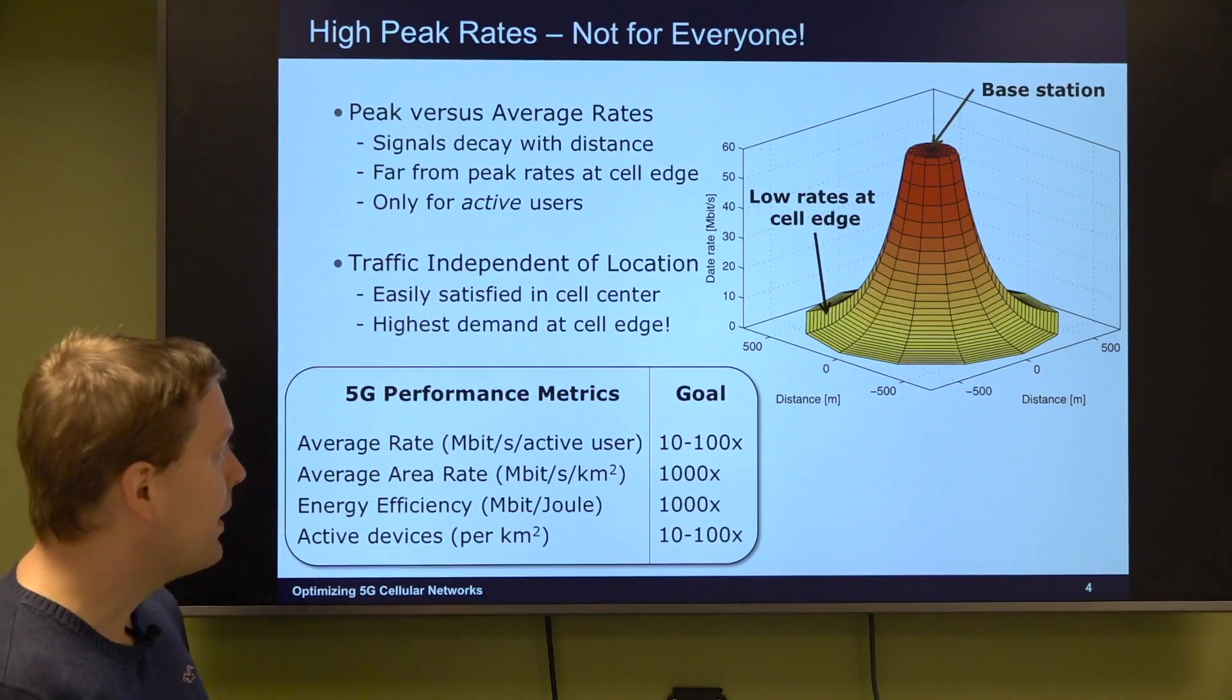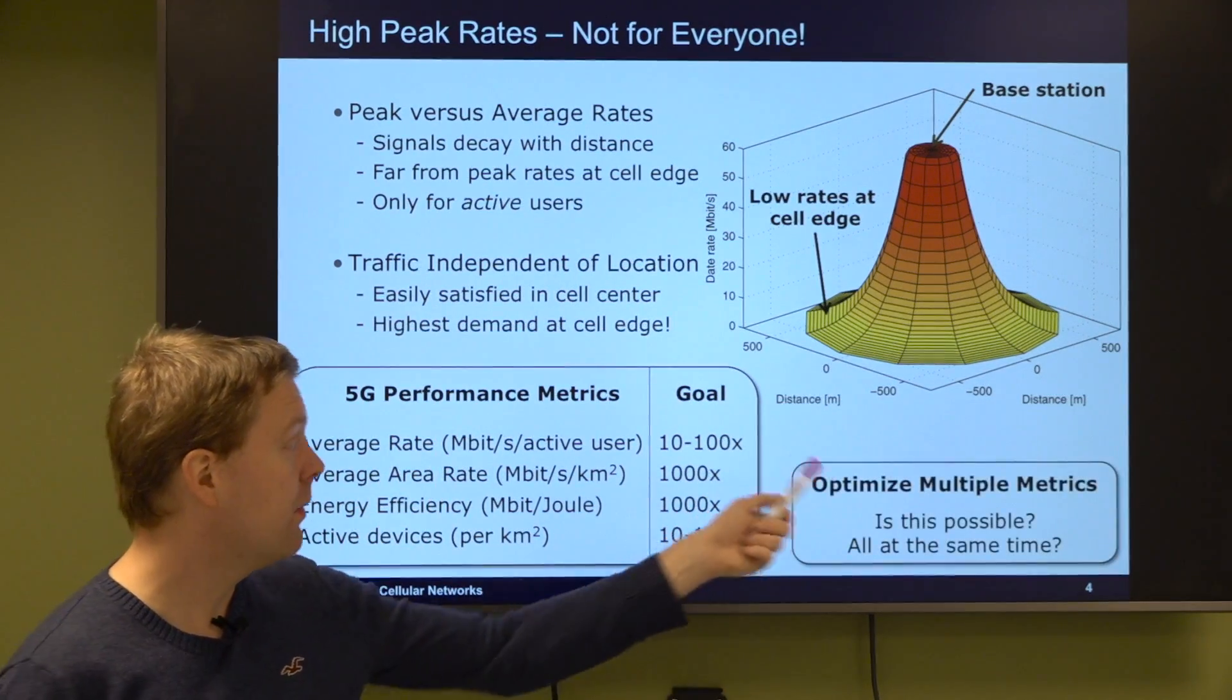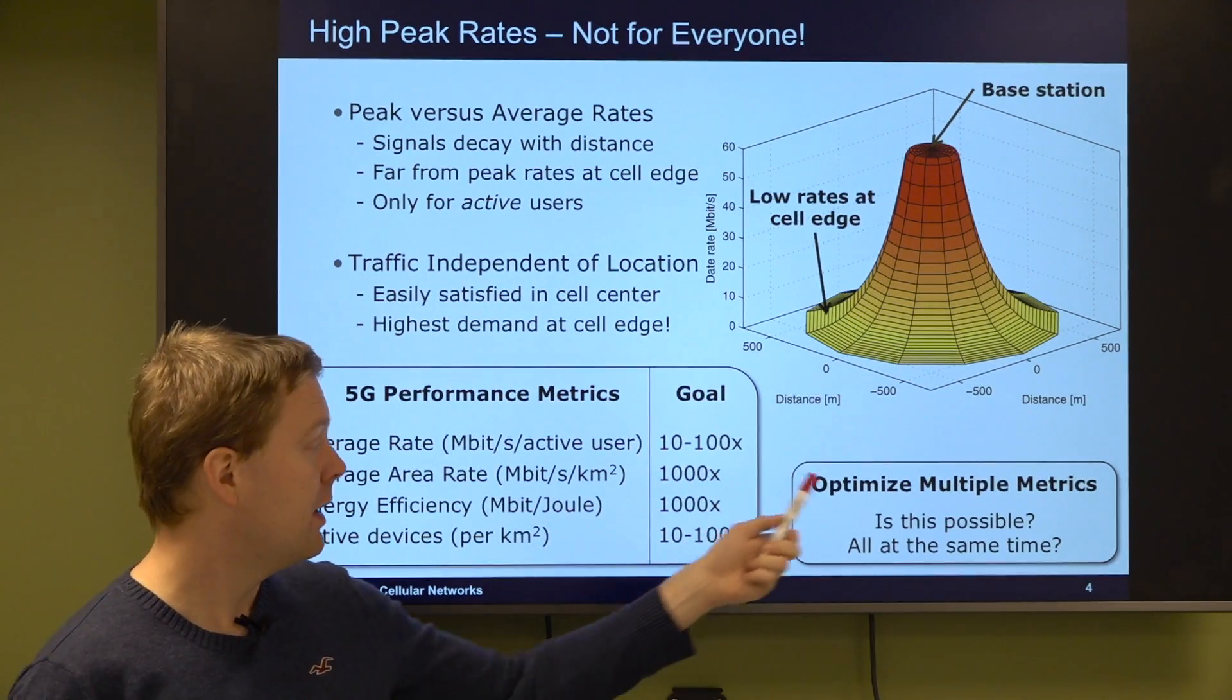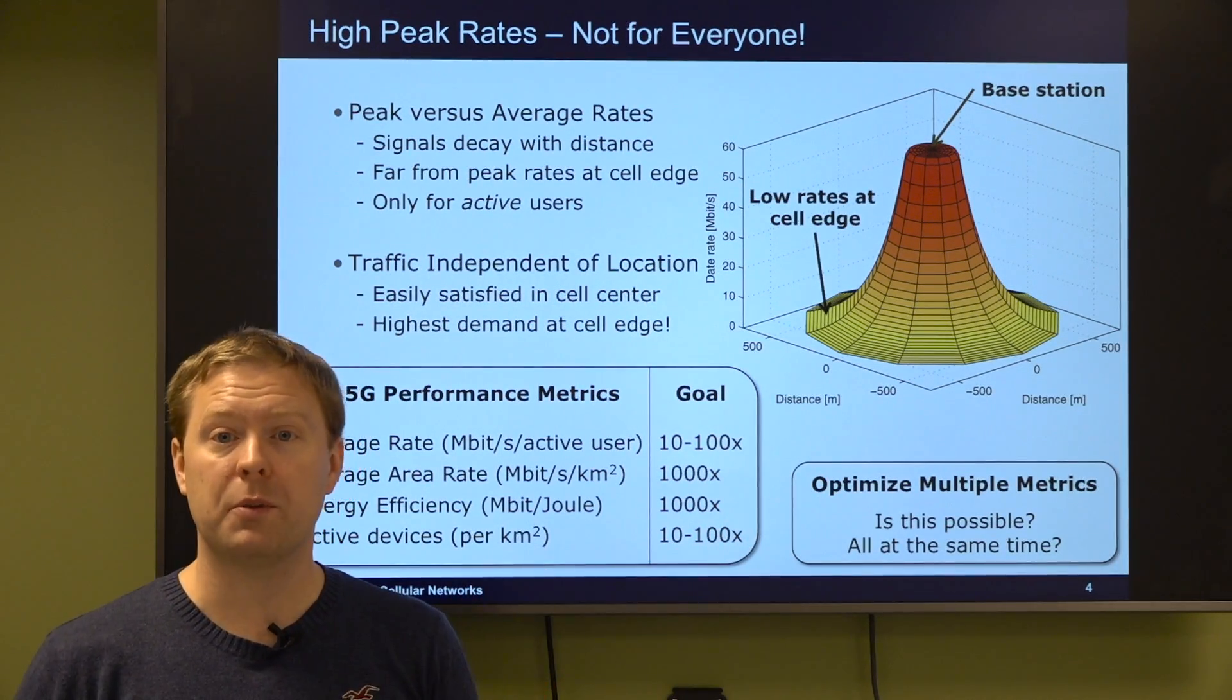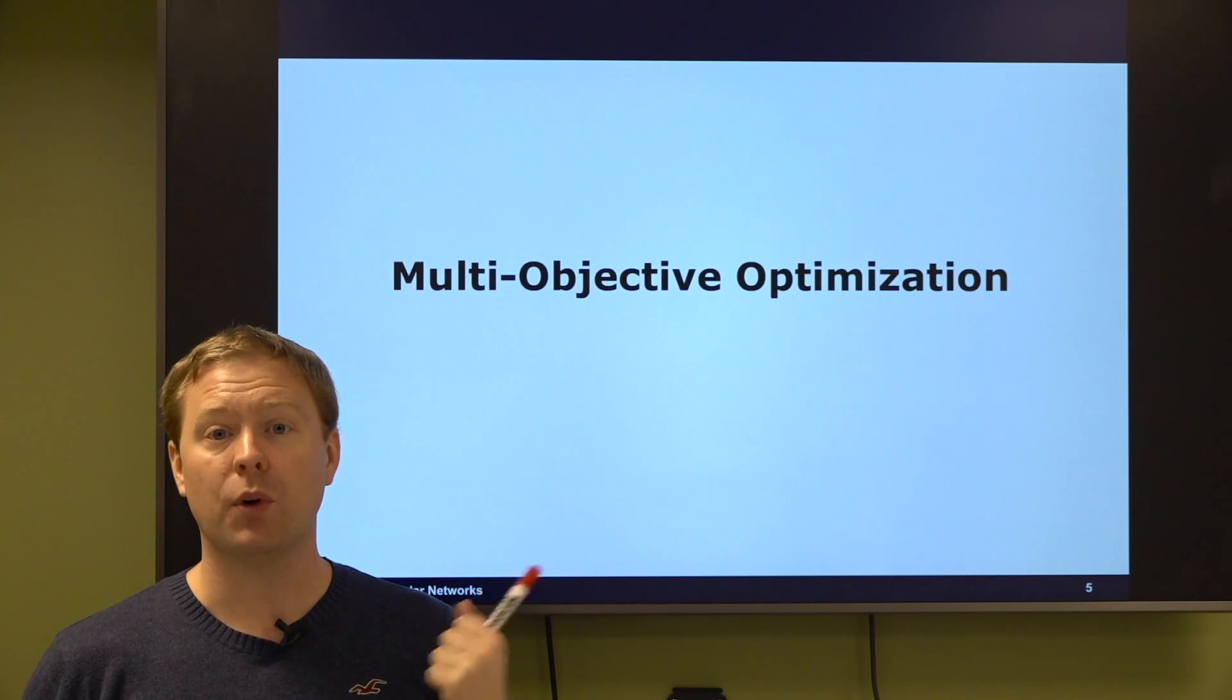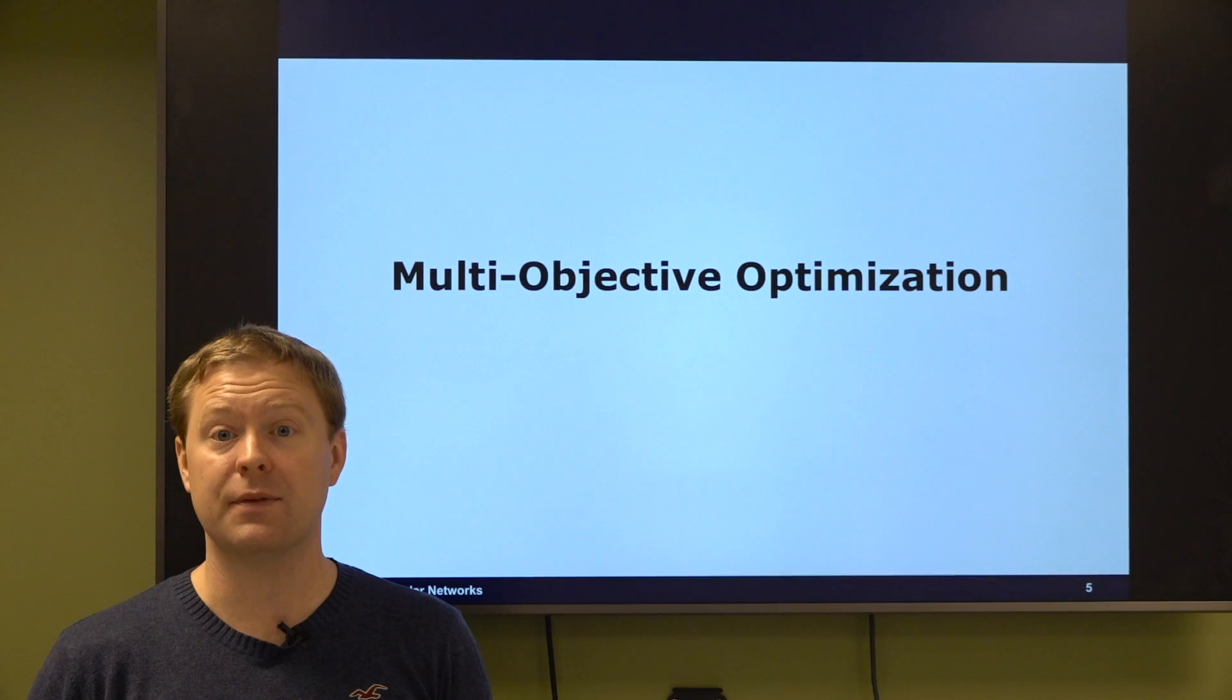So what you see here is that we have a list of different performance metrics. How can we optimize multiple metrics like this at the same time? Is it possible? Can all of them be optimized at the same time? The answer to that comes from the area of multi-objective optimization that I'm going to talk about in this video.